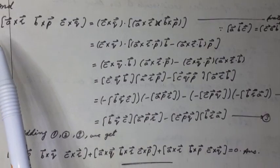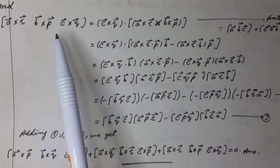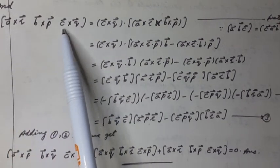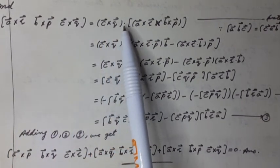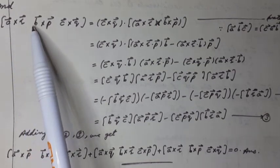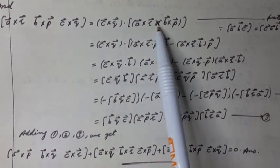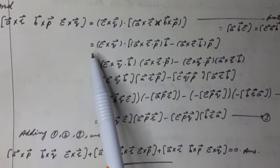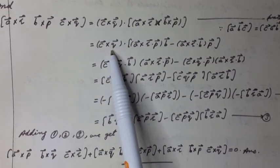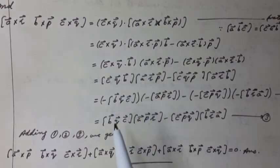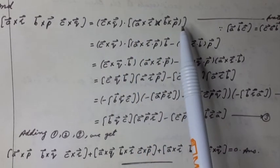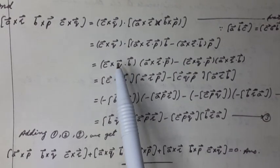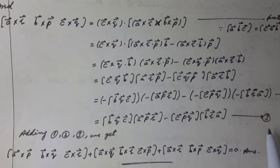Now A vector cross R vector, B vector cross P vector, C vector cross Q vector box can be written as equal to C vector cross Q vector dot A vector cross R vector cross B vector cross P vector. Applying the formula of vector triple product similarly, we have equation 3.